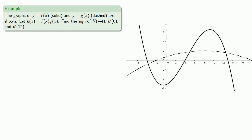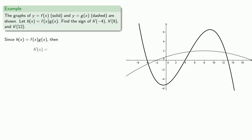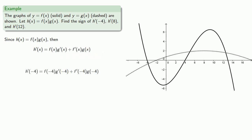So for example, let's say we have two graphs but are interested in the derivative of their product function. Since h of x equals f of x times g of x, we can use our product rule to find an expression for the derivative. And if I want to find the derivative at negative 4, I can substitute in those values.